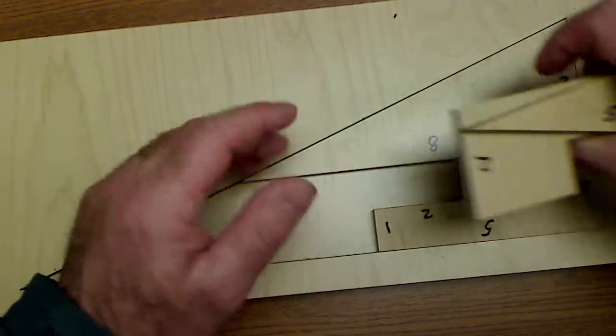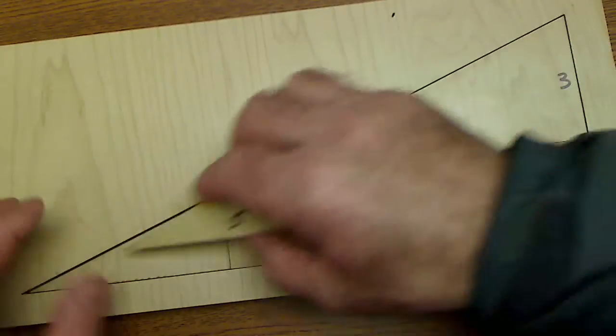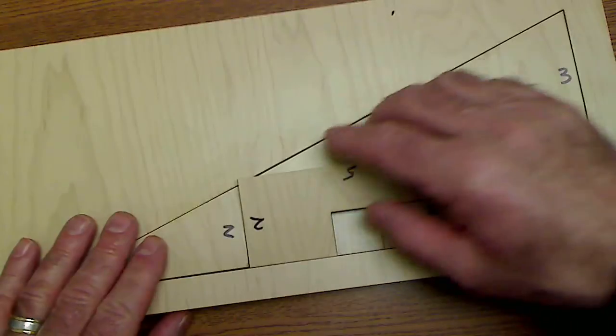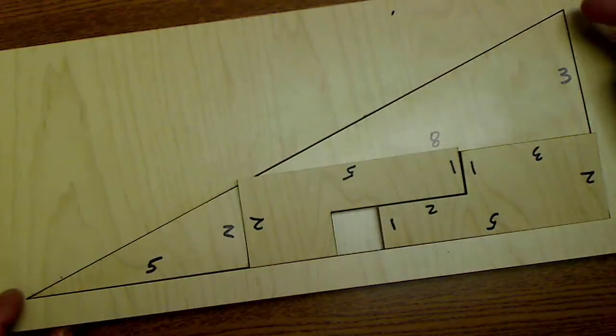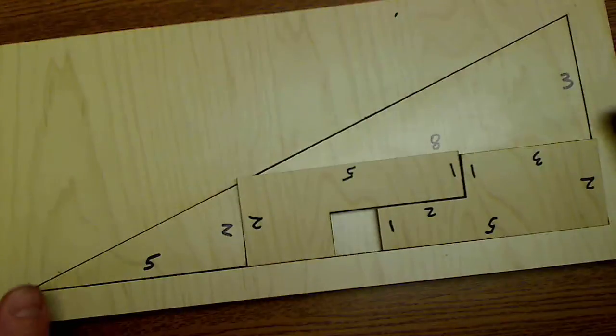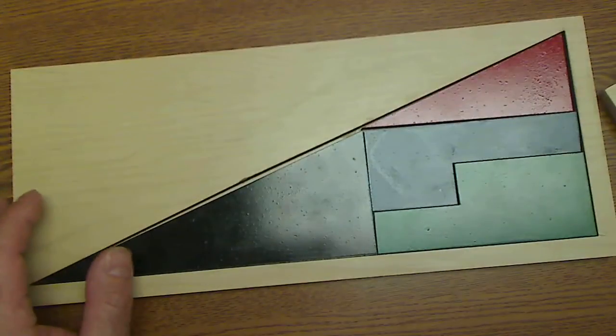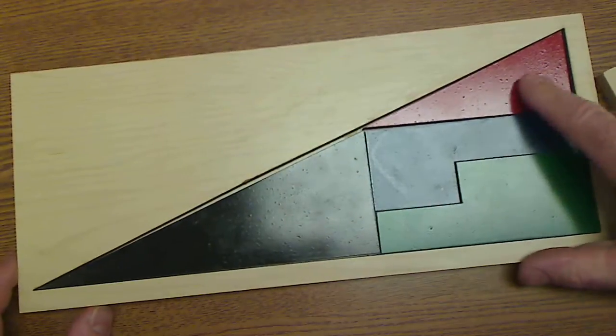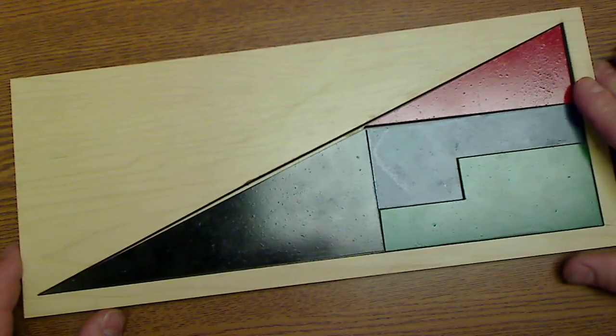So I'll rearrange these pieces and you'll see it doesn't work. These don't fit in here. The reason why it doesn't work is this is actually not a diagonal from corner to corner. The shape is actually not a triangle but rather a quadrilateral. It's a four-sided figure.